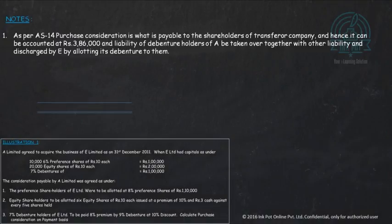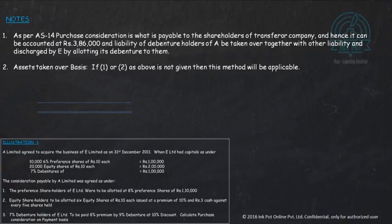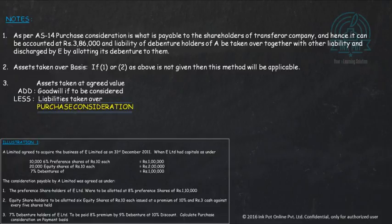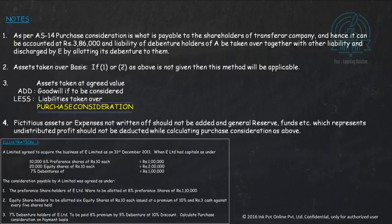The balance that can be accumulated is ₹3,86,000 and the liability of debenture holders is taken together with liabilities and discharged by allotting debentures to them. We have followed the net payment method in this case. Regarding the net assets method: fictitious assets are always written off and should not be added. General reserve fund, which represents undistributed profit, should not be deducted while calculating the purchase consideration.